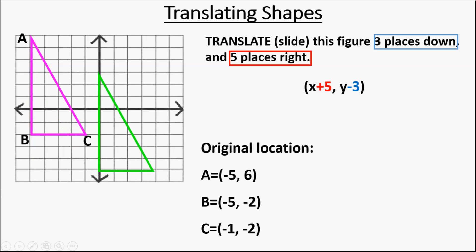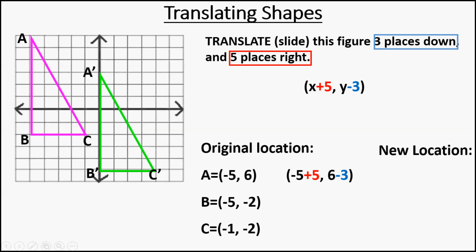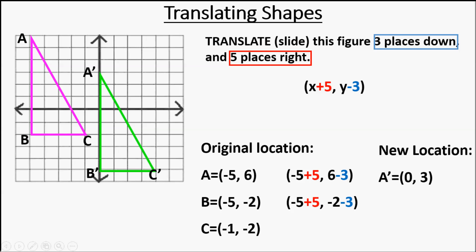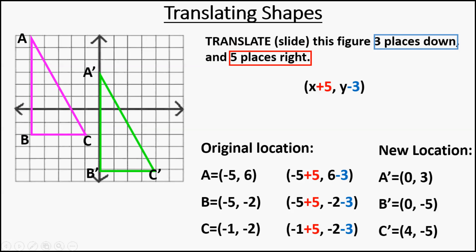If you look at the picture again, we're moving the triangle down and over. We're going to label these points A-prime, B-prime, C-prime. Those little apostrophes mean the new location of the figure once it's moved. You'll also hear the term that this new triangle is the image of the old triangle. So negative five plus five for that x is going to be zero. Your new y-value: six minus three will be three. Point B was at negative five, negative two — add five to x, subtract three from y, we get zero, negative five. Point C: add five to negative one and subtract three from negative two, and you get four, negative five. Sometimes they won't give you a picture, so you need to know these math tricks.